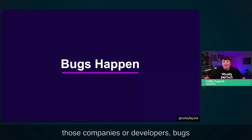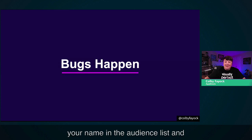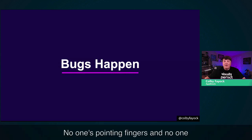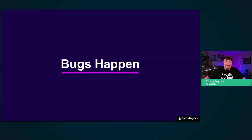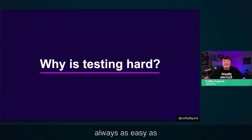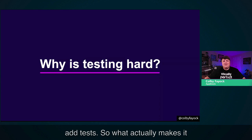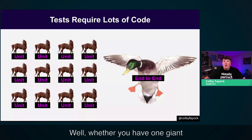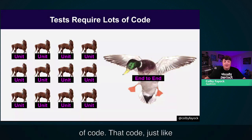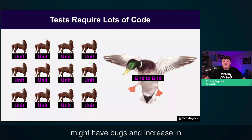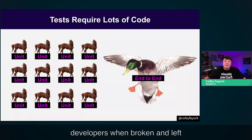This isn't meant to shame any of those companies or developers. Bugs happen to everyone. Chances are one of you has written a bug within the last week, and that's totally okay. But getting good test coverage isn't always as easy as just 'add tests.' Whether you have one giant end-to-end test or 100 unit tests, all those tests take time to write. They require a lot of code that, just like features, needs to be maintained — and might have bugs and increase in complexity. Tests can easily lead to technical debt and end up frustrating developers when broken and left untouched.